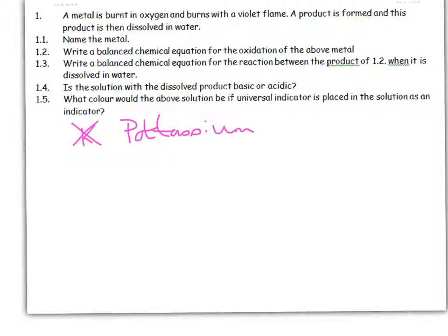Write a balanced chemical equation for the oxidation, in other words it burning in oxygen. So it's K plus O2. A metal plus oxygen gives me a metal oxide. And in this case, it's going to be K2O. And I need a balancing 4 in front of the potassium.